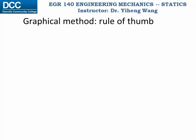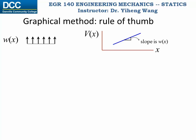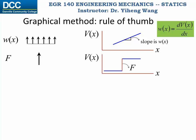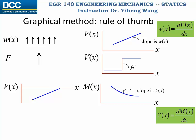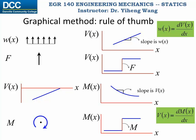As a summary for the graphical method: if there's a distributed load on the member, then the load intensity function w corresponds to the slope in the shear force diagram. The load intensity pointing upwards gives a positive slope and increasing shear force on the diagram. Load intensity is not always constant, but it is always true that w(x) = dV/dx. If anywhere on the member there's a concentrated load, then on the shear force diagram there's a corresponding step change. The shear force is the slope function or derivative of the bending moment function: V(x) = dM/dx. The slope anywhere on the bending moment diagram corresponds to the shear force value at that location. And lastly, the external couple moment applied on the member corresponds to a step change in the bending moment diagram.